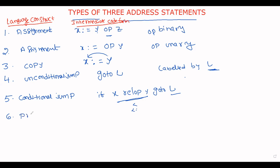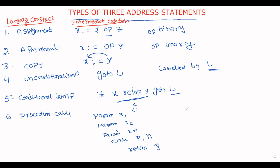The next type is a procedure call. For example, you have different parameters: param x1, param x2, and so on, param xn, and then 'call p, n'. Here x1, x2, ..., xn are the parameters used in the procedure p, and n represents the number of parameters. You can also write the statement 'return y', which indicates a return value.